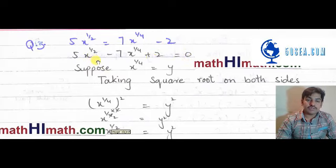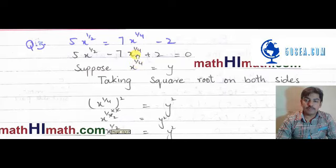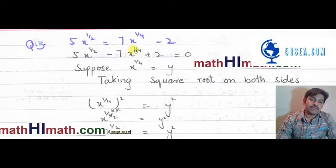अब यह question थोड़ा सा tricky इसलिए हो रहा है क्योंकि यहाँ पे powers जो हैं, किसी जगह पर 1 over 2 है, किसी जगह पर 1 over 4 है। तो इसको हम सबसे पहले simple power बनाने की कोशिश करते हैं। इसको simple power बनाने के लिए हम suppose करते हैं कि x raised to power 1 over 4 is equal to y.